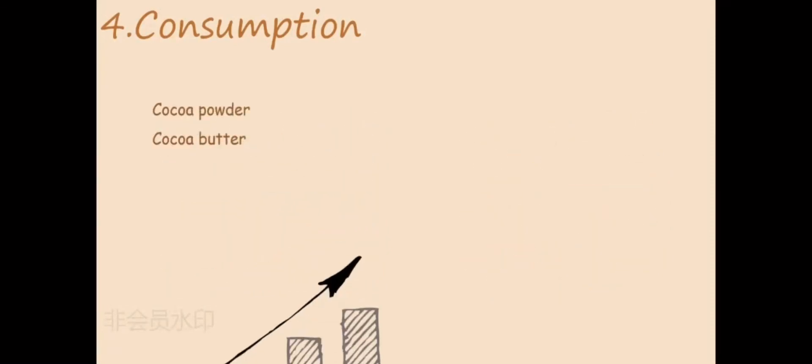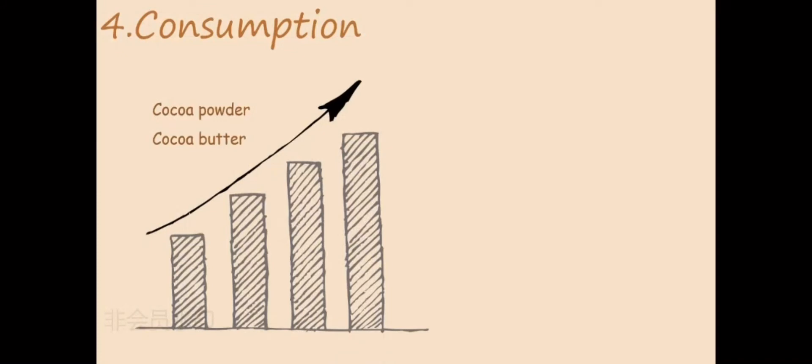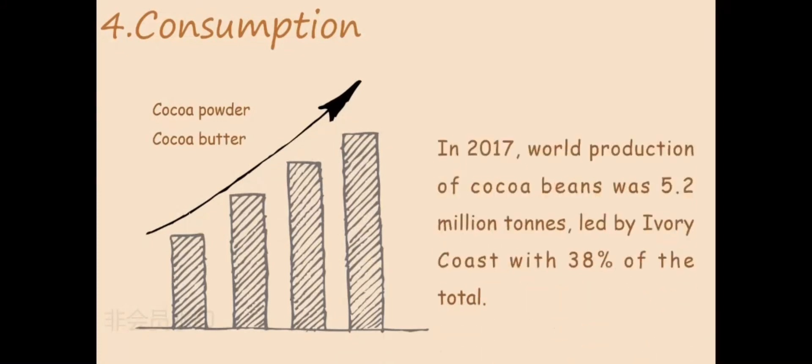Besides, I want to talk about cocoa production. In 2017, the world production of cocoa beans was 5.2 million tons, led by the Ivory Coast with 38% of the total.